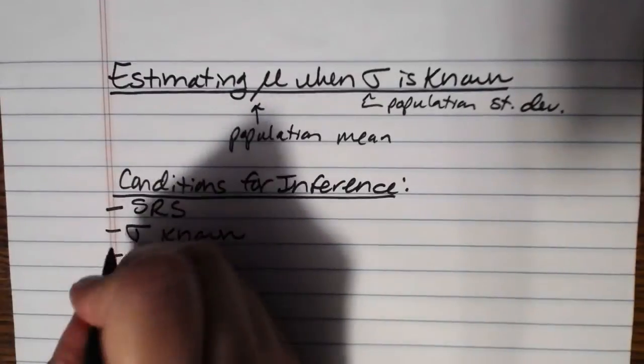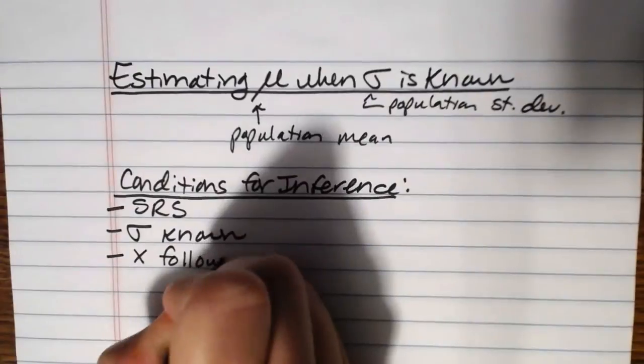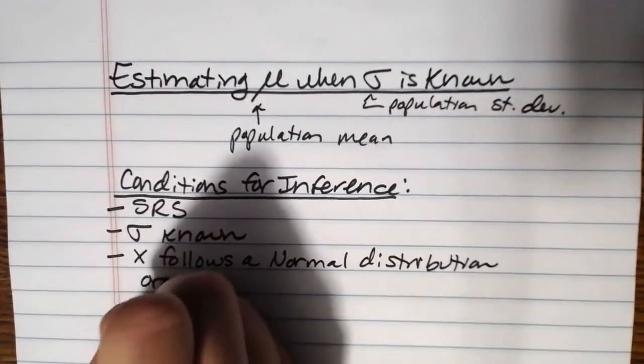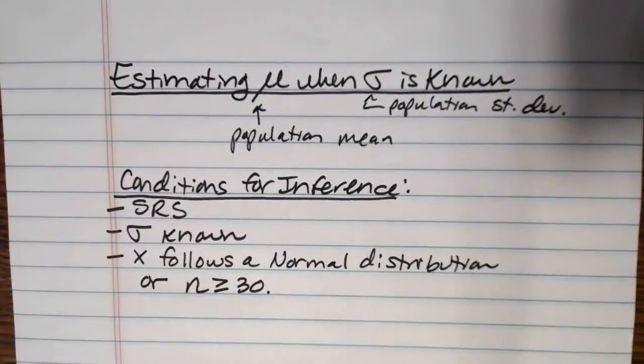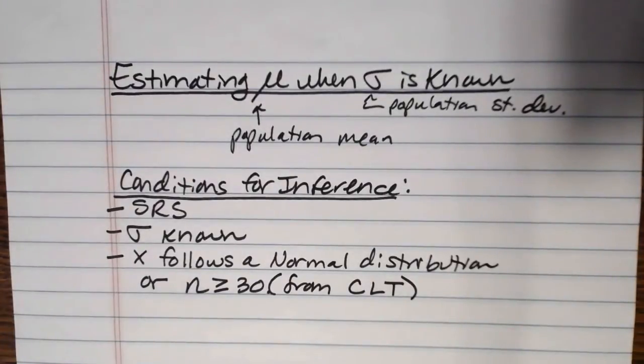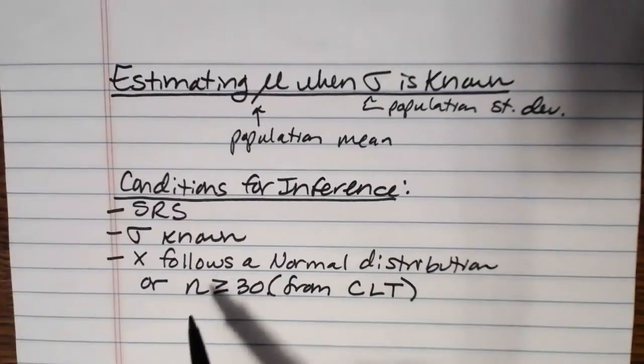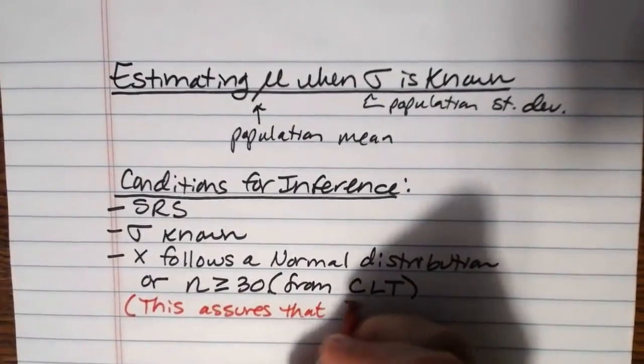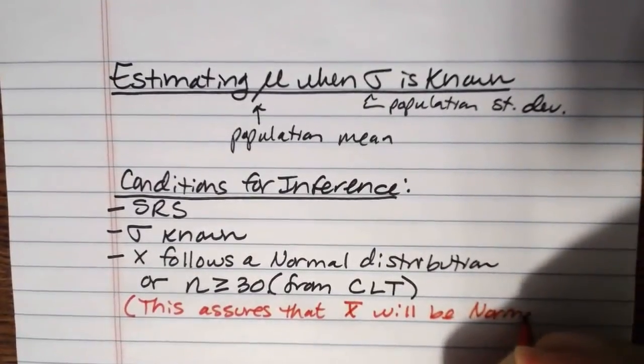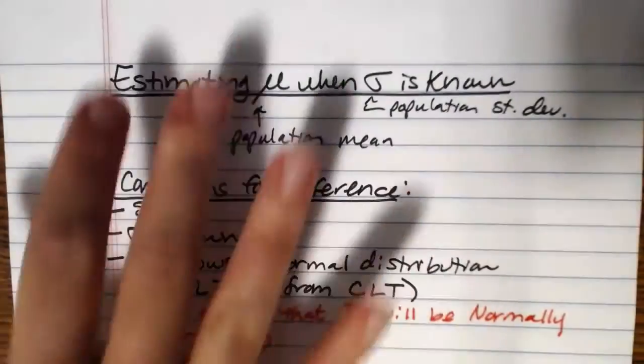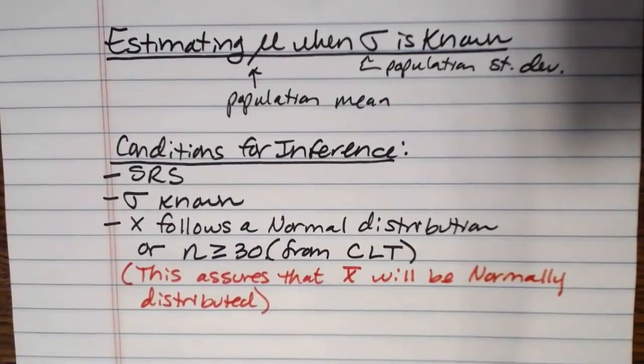And then your other conditions are you need to know that x follows a normal distribution. So the variable has to follow a normal distribution, or we need a sample size of greater than or equal to 30. That's coming straight out of the central limit theorem. We need to know that x is normally distributed or we need to have a sample size of greater than or equal to 30, because that's what assures that x bar will follow a normal distribution. And we need to know that because to do the computations for this estimate, we're actually going to be using normal CDF.